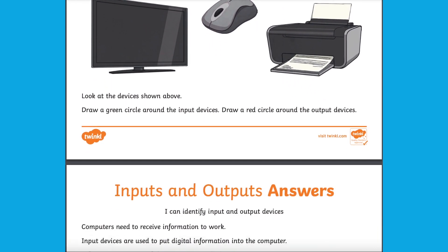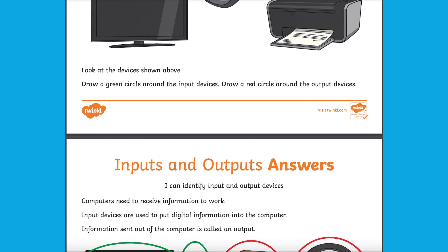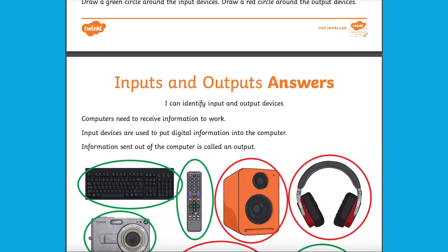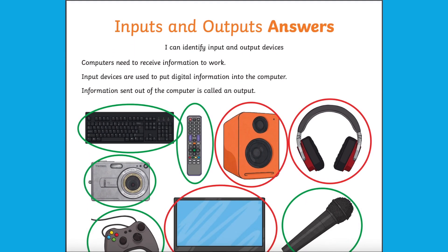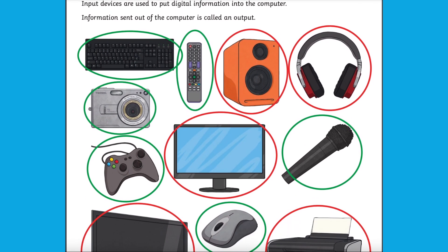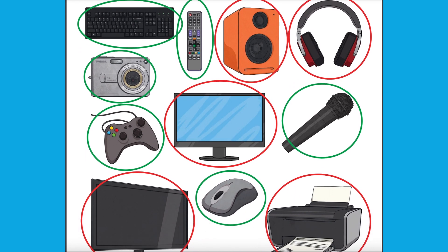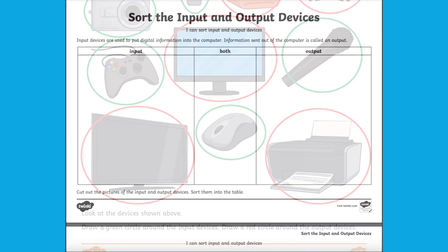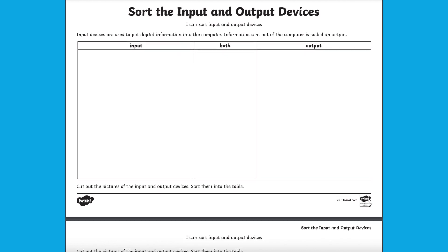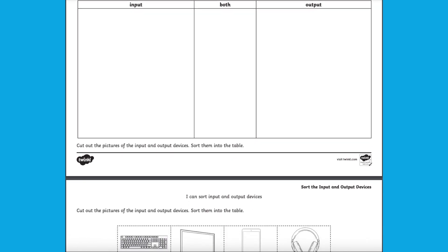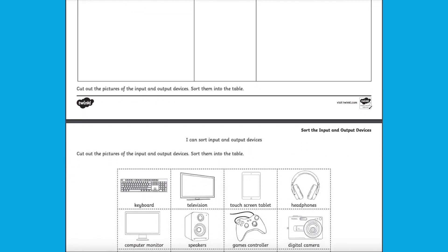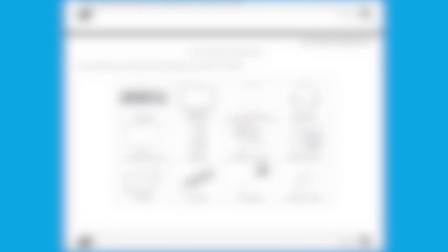With technology constantly advancing, there are sure to be many devices that we've not listed. Why not use this as a research opportunity? Children can add their own devices which they use which may not be listed. They could also look up input and output devices from past and present.